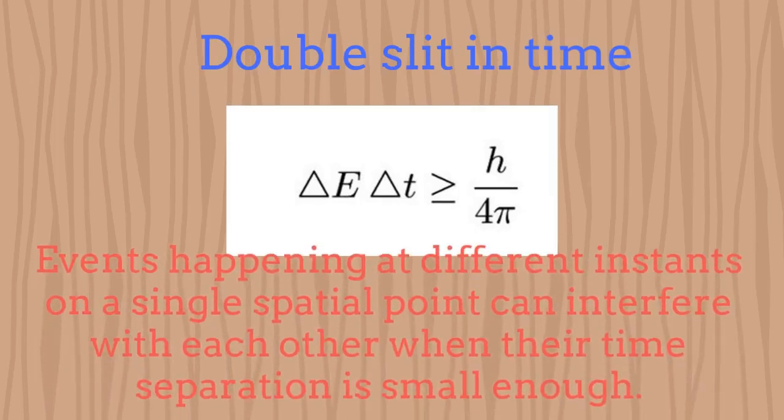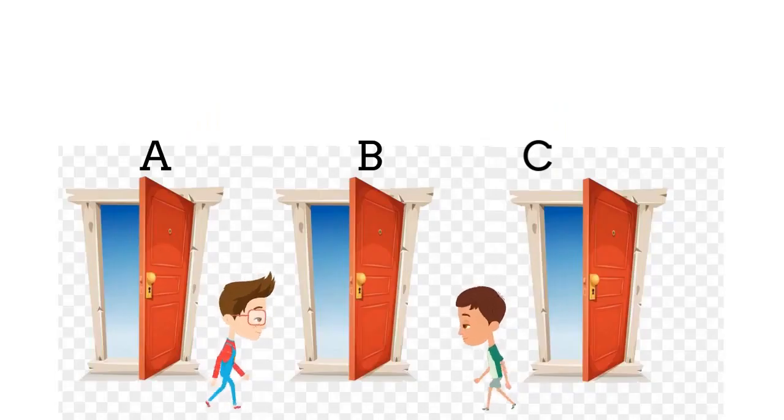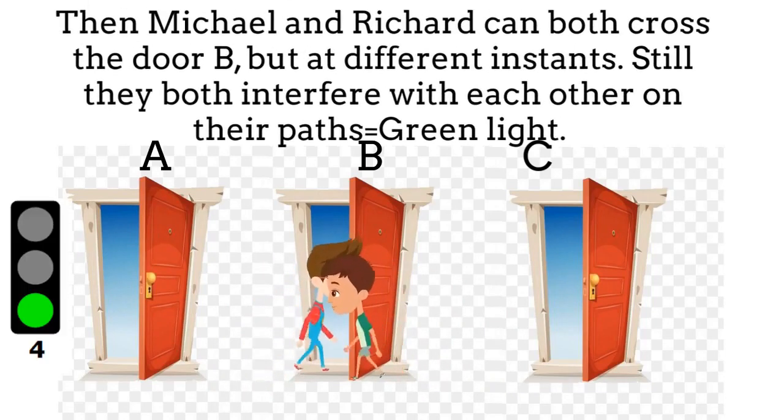The response to this question is inside the energy-time uncertainty principle and it corresponds to the understanding of the double slit in time. Then events happening at different instances but on the same spatial point can interfere with each other as far as the time separation between the events is small enough or better consistent with the uncertainty principle. In this way Michael and Richard can both cross the door B at different instants and still interfere with each other. This is the main reason because of which the green light can still be activated.